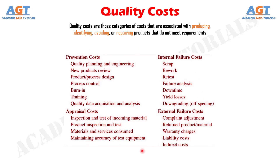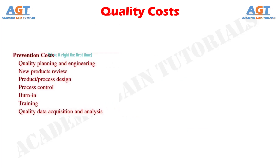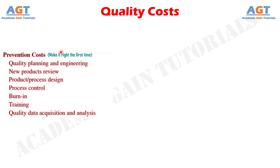These cost categories are shown in this table. We will now discuss these categories in more detail, starting with prevention costs. Prevention costs are those costs associated with efforts in design and manufacturing that are directed toward the prevention of non-conformance. Broadly speaking, prevention costs are all costs incurred in an effort to make it right the first time.